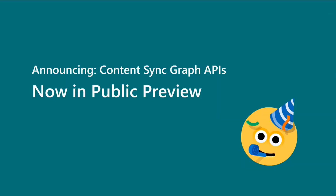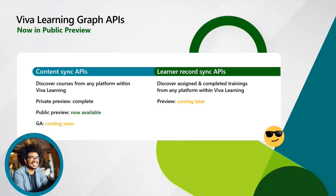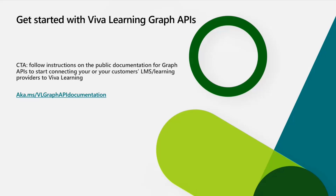This leads to the big announcement for today: the content sync Graph APIs are now in public preview. This slide shows detailed timelines for all the different Graph APIs. We just completed the private preview for our content sync APIs, and three partners have already successfully integrated using them. The Graph APIs are now available in public preview, and soon after we'll have them available in GA. Shortly after the public preview of content sync APIs, we'll also be announcing the Learner Record Sync APIs private preview. To get started, follow the instructions in the public documentation for the content sync Graph APIs — this process typically takes around a month.